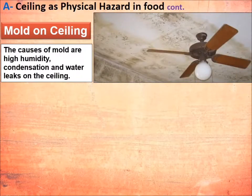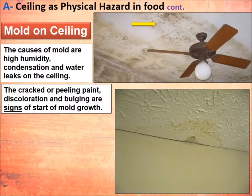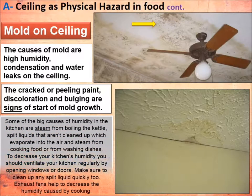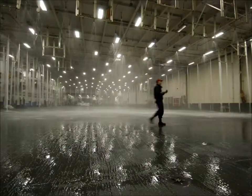A very important factor is mold growth on the ceiling. This mold growth is caused by high humidity, condensation, or water leaks. Signs of mold growth starting include peeling paint, red discoloration, or cracks in the paint on the ceiling. There must be awareness about mold growth from steam or condensation of water vapor from cooking activities.